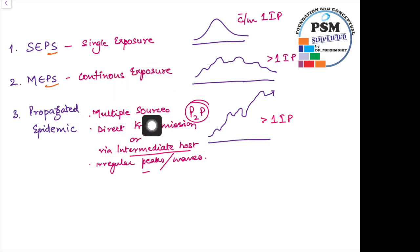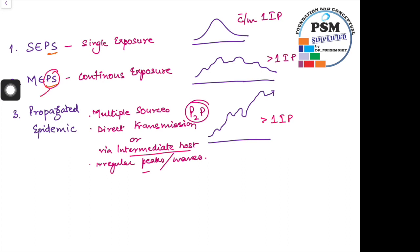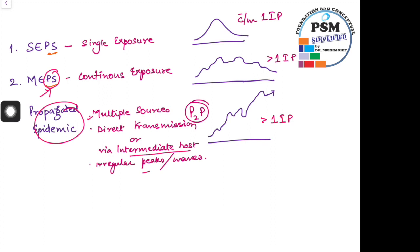The key point of difference between a multiple exposure point source and a propagated epidemic is that in MEPS there is a single point source, whereas in a propagated epidemic there are multiple sources. That is the only difference.